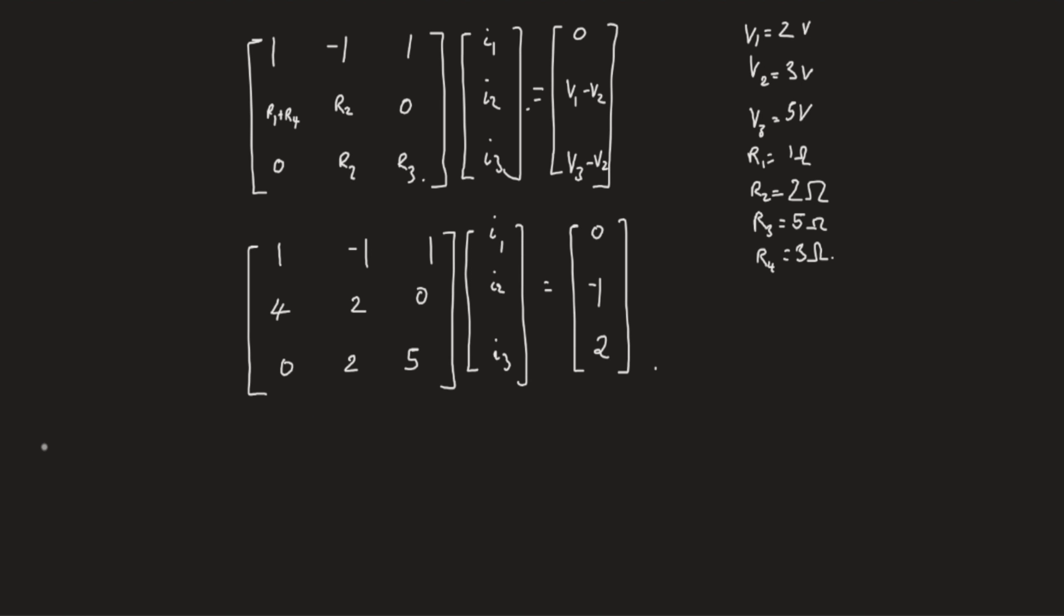You can use Gaussian elimination as previously done. We formulate the augmented matrix, try to null out this guy by replacing the second row with R2 minus 4 R1. R1 remains intact, so does R3. Then 4 minus 4 times 1 is 0; 2 minus 4 times minus 1, that's 6; 0 minus 4 times 1, that's minus 4; minus 1 minus 4 times 0 remains minus 1.